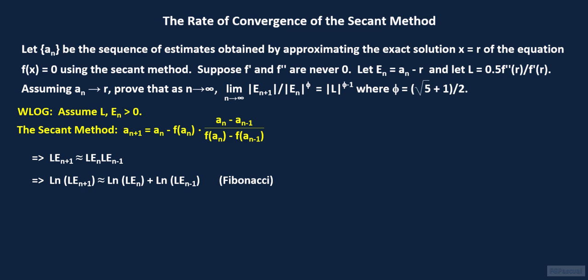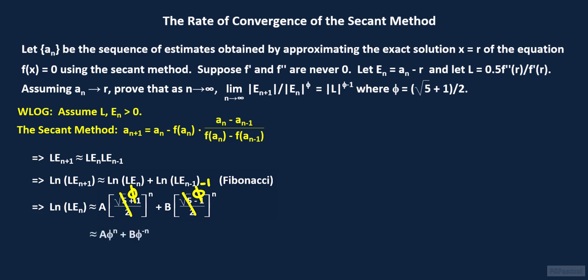There is a fairly well-known formula for the terms of a Fibonacci sequence. According to that formula, the natural logarithm of l times e sub n is approximately equal to some constant a times the quantity the square root of 5 plus 1 divided by 2 raised to the nth power plus another constant b times the quantity the square root of 5 minus 1 divided by 2 raised to the nth power. This quantity is of course phi, and the viewer can verify that the other quantity is the reciprocal of phi, so that the natural logarithm of l times e sub n is approximately a times phi raised to the nth power plus b times phi raised to the minus nth power. The natural logarithm of l times e sub n plus 1 is approximately a times phi raised to the n plus 1th power plus b times phi raised to the minus n minus 1th power.